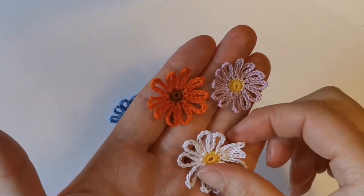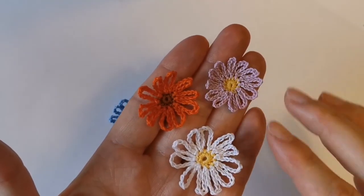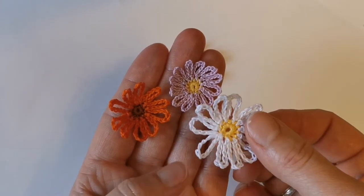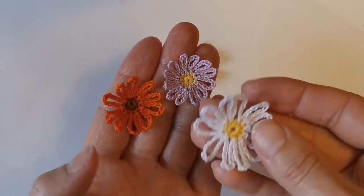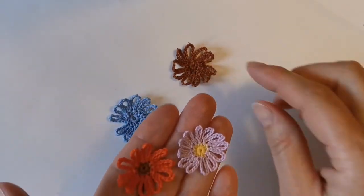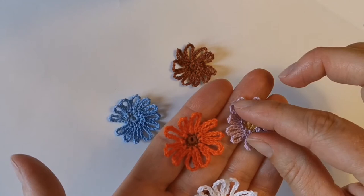Hi guys, welcome to our crochet channel. In this video I would like to show you how to make an easy daisy in two colors, or you can make it in one color. I will use the classic thread number 10 and crochet hook number one. Let's get started.